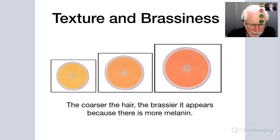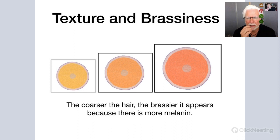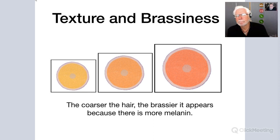To clarify: if you take three strands of the same color in three different textures and apply a bleach product for the same amount of time, the finer texture will appear lighter while the coarser texture will still be on the brassy side. That's exactly correct — texture plays a part in the lightening of hair color.